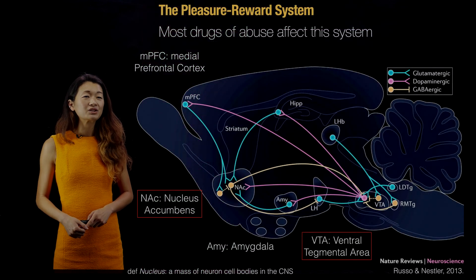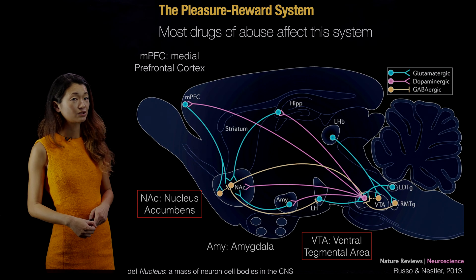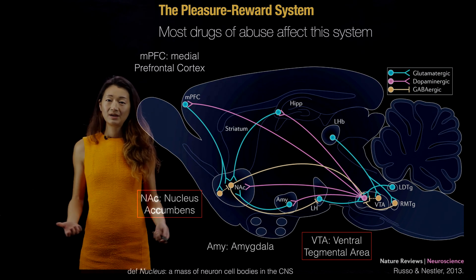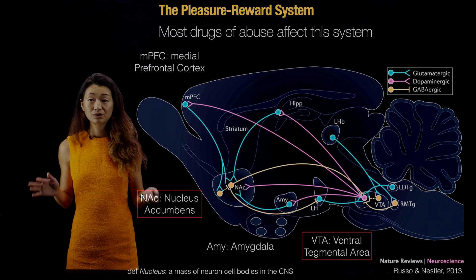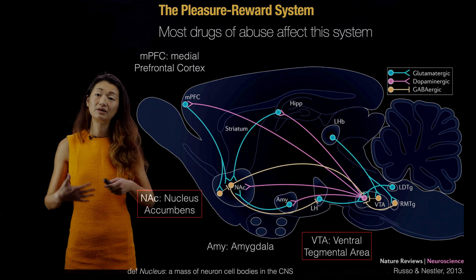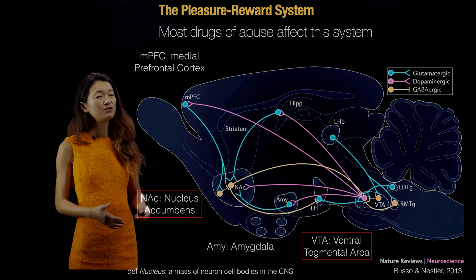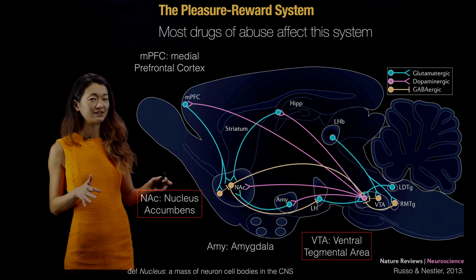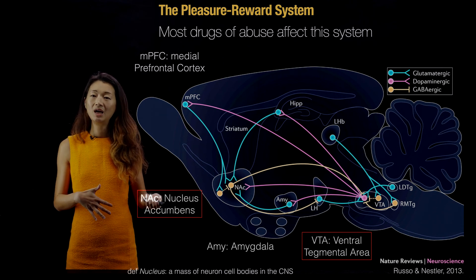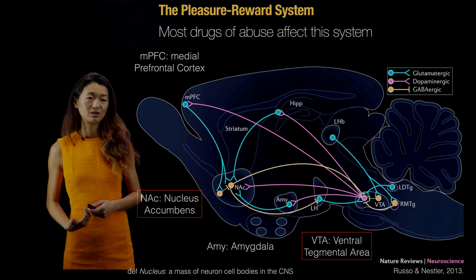To talk about drugs of abuse and recreational drugs, we have to talk about the pleasure reward system. So far in these lectures we haven't talked too much about the different parts of the brain and what they do — that's more the focus of the next set of lecture videos. But I'm going to give you a preview here because it's really fascinating — not only the different molecules involved, but also the different molecular systems involved in different parts of your brain.